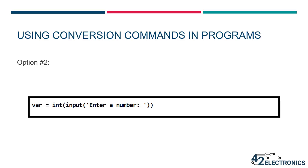The second option is to do this by wrapping the int command around the entire input command. In this example from lesson A13, the user has asked for input. That input is converted to an integer and that integer value is saved to the variable called var. This way of writing code is slightly more complicated looking, but it does result in one less line of code.